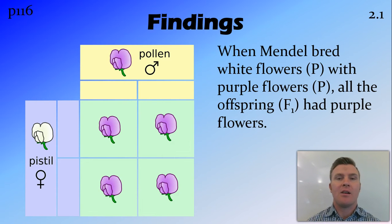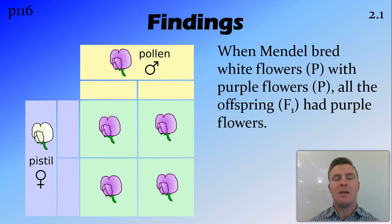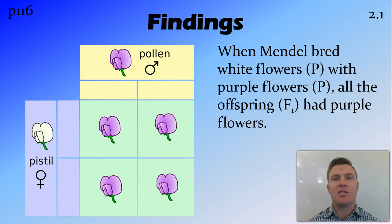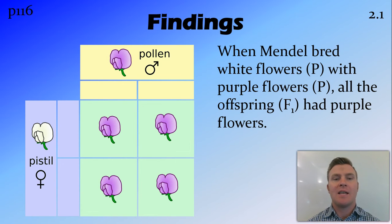Now his findings — and I'll just use the flower colour as an example of one of the experiments that he did, but as I said there are seven different traits that he was looking at. When he bred white flowers with purple flowers, he found that the offspring were all purple flowers. When we do genetics we label our generations, the first generation being the P generation, and subsequent generations being F with a subscript number. So in this case the white and purple flower are the P generation, and the purple flowers that were bred from this — the offspring — are the F1 generation.